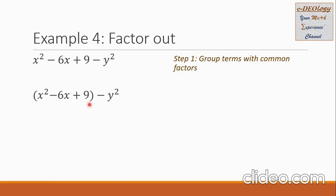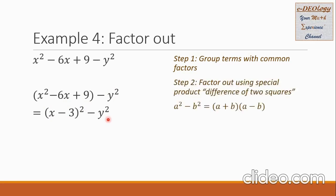This trinomial can be factored as the square of a difference of two terms. Then I copy the negative y squared. In step 2, I factor using the special product difference of two squares. The formula is: a squared minus b squared equals the binomial a plus b times a minus b.